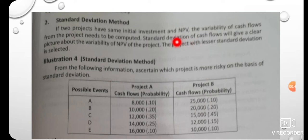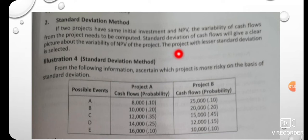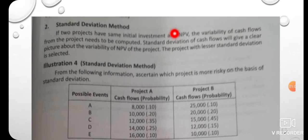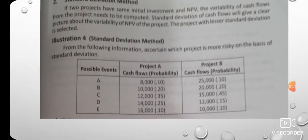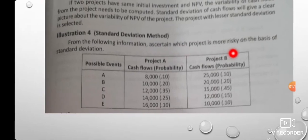The standard deviation of cash flows will give a clear picture about the variability of the net present value of the project. The project with the lesser standard deviation is selected. When comparing projects using the standard deviation method, we assess which project carries less risk.